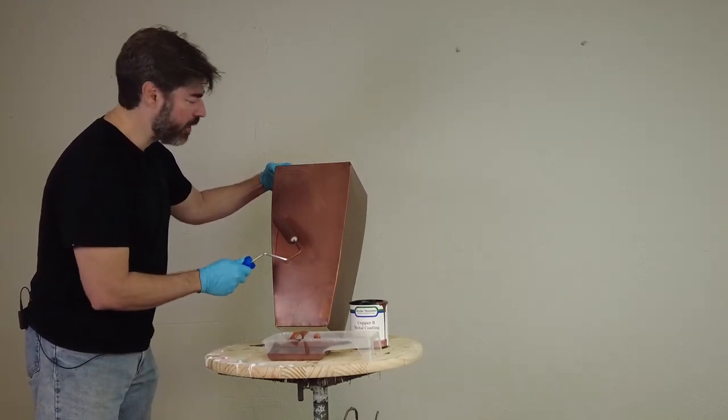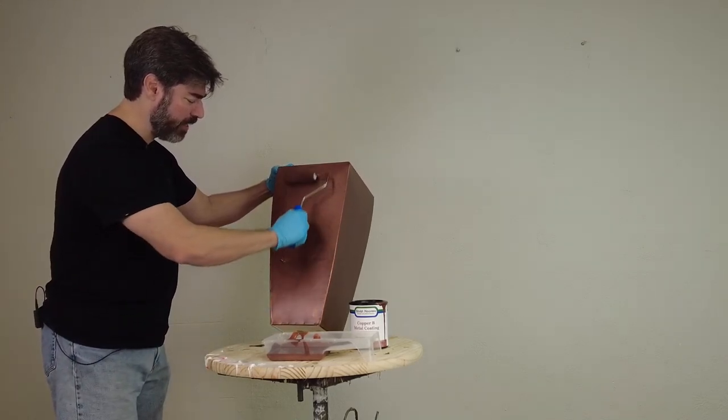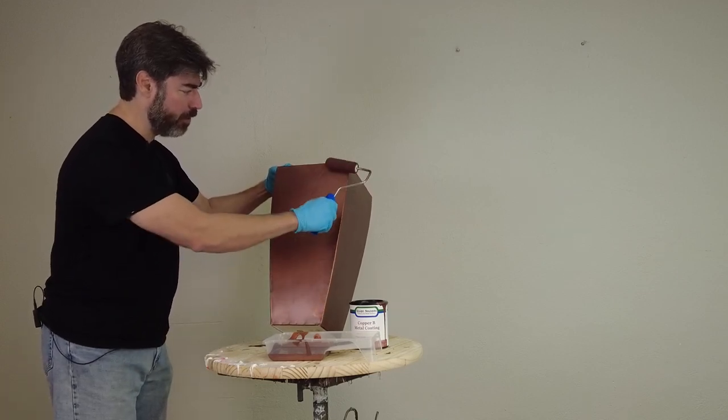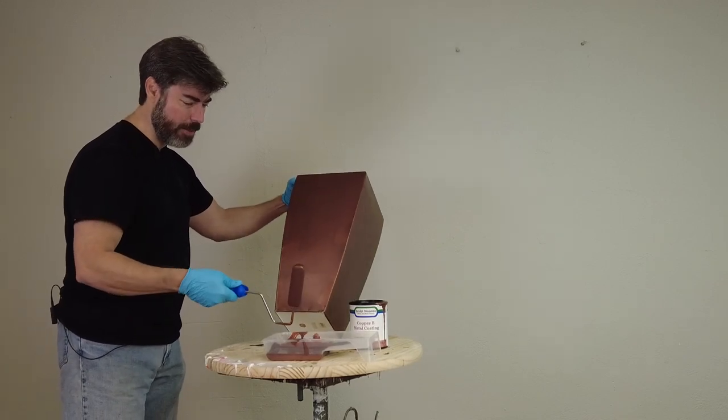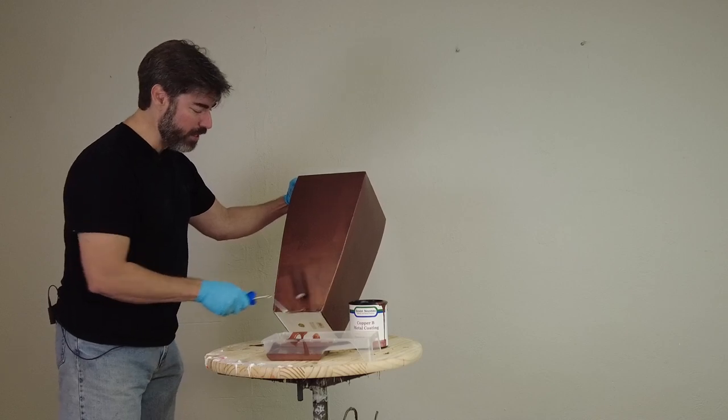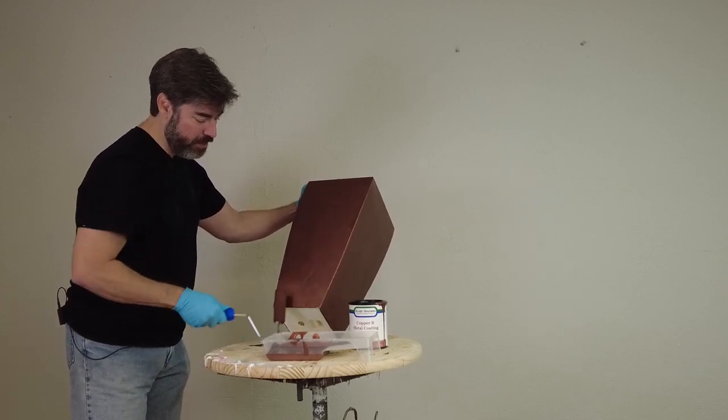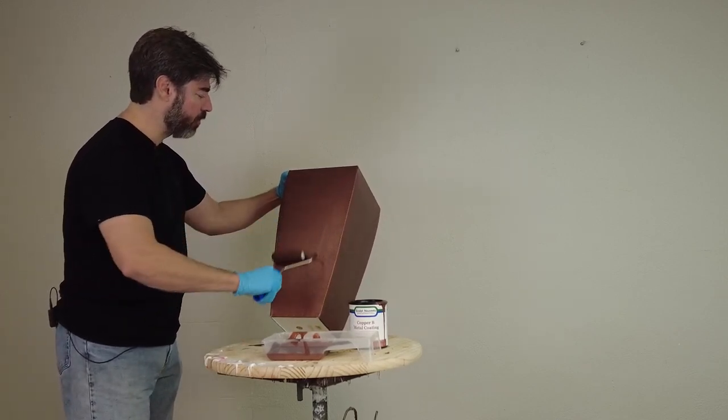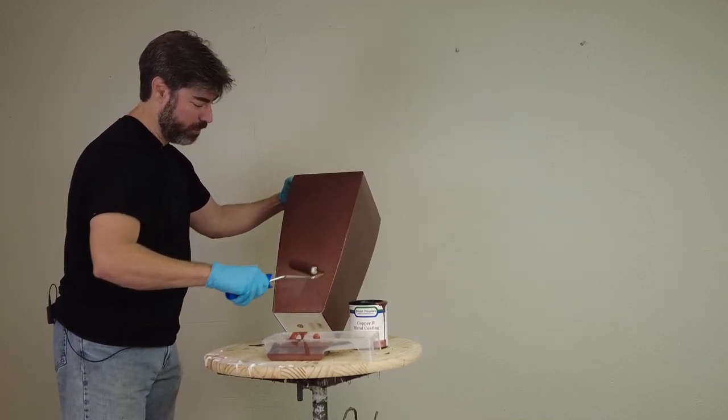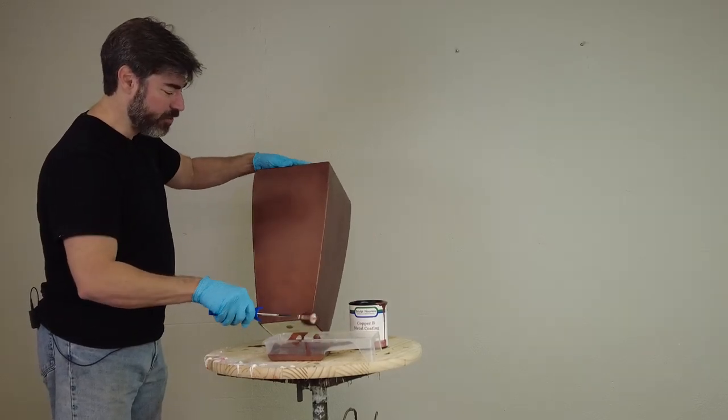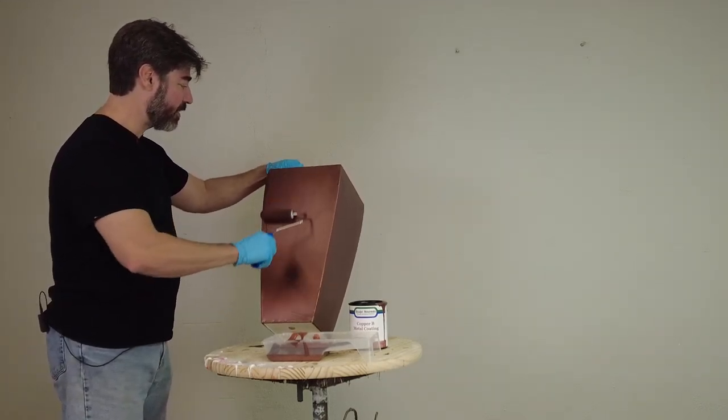I'm going to go ahead and start here. And I also want to put this on relatively thick, not so thick that we're getting runs and things like that, but we want to make sure we've got enough material on the surface here to get a good reaction. So if we skimp and get that too thin, we're going to get a very weak oxide forming. So make sure you've got enough of the metal coating to really get a good reaction there. And again, move with purpose because we're going to start applying our patina here pretty fast. So I want to make sure I get this all on each side and then move to the next side.